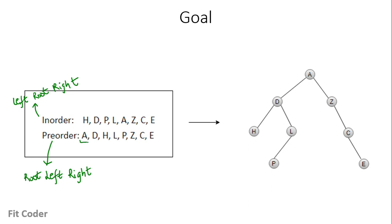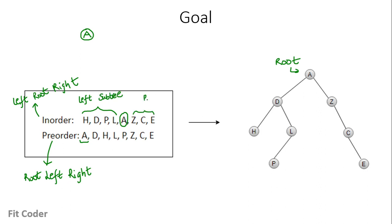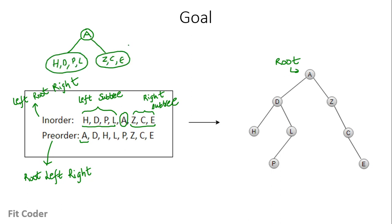The first node in the preorder traversal will always be the root node - here you can see A is the root node. So the first step is we make the first node of the preorder traversal the root node. Then we find this node in the inorder traversal. All nodes to the left of A in the inorder traversal will be part of the left subtree, and all nodes to the right will be part of the right subtree.